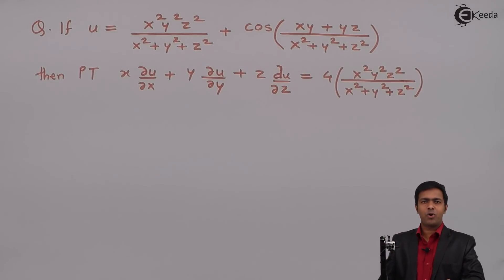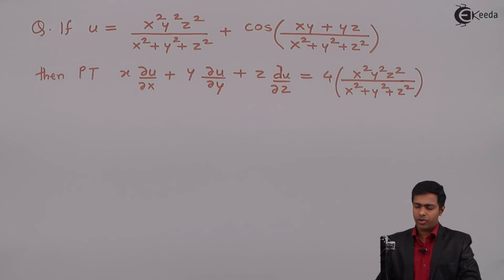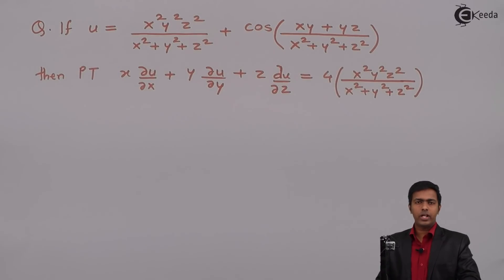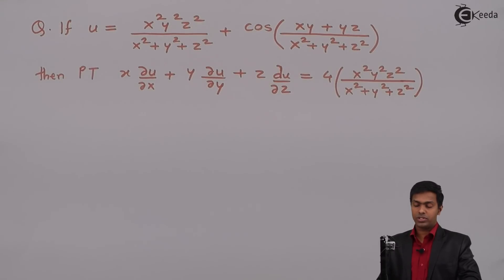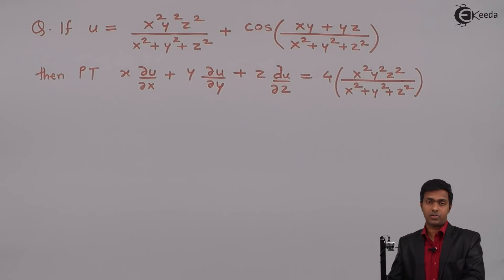Hello everyone. Here in this problem, u is given as x²y²z²/(x²+y²+z²) plus cos(xy+yz)/(x²+y²+z²), and we have to prove that x∂u/∂x + y∂u/∂y + z∂u/∂z = 4x²y²z²/(x²+y²+z²).